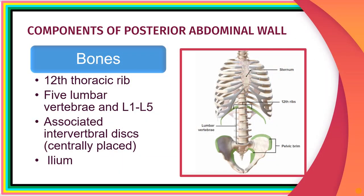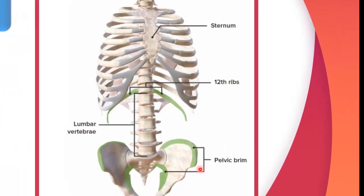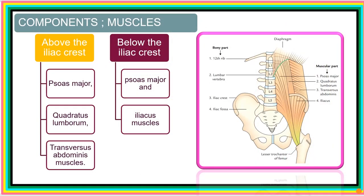We'll start with the bony component. Beginning from the 12th rib and running through the posterior region, we look at all the lumbar vertebrae from L1 to L5, along with the intervertebral discs between the bodies of these vertebrae. We also see the iliac bone that forms the pelvic brim. These bones form the bony components of the posterior abdominal region.